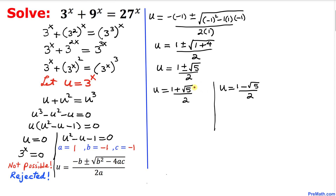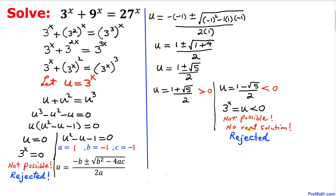Splitting the two solutions: u equals (1 plus square root of 5) divided by 2, which is greater than 0, and u equals (1 minus square root of 5) divided by 2, which is negative. Since u equals 3^x is an exponential function and cannot be a negative number, we reject the negative solution as having no real solution.